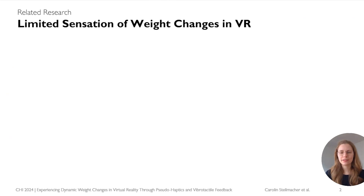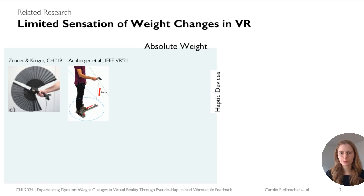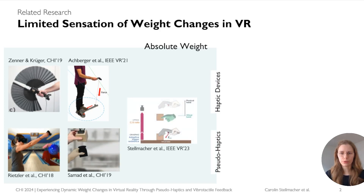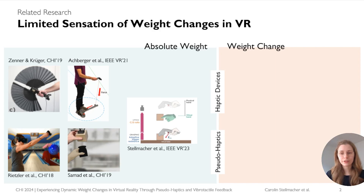Conveying a sense of object heaviness in VR has been a challenge. The majority of previous research focused mainly on conveying absolute weights using haptic devices, pseudohaptics, or a combination of both. However, there is limited research on simulating a change in object weight — for example, when filling a virtual glass of water. This lack of responsiveness of the haptic feedback during the interaction limits a comprehensive experience of objects in VR.